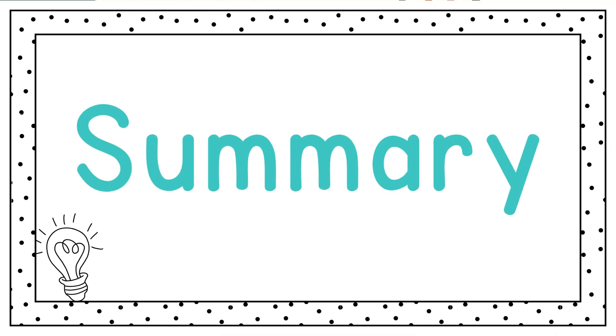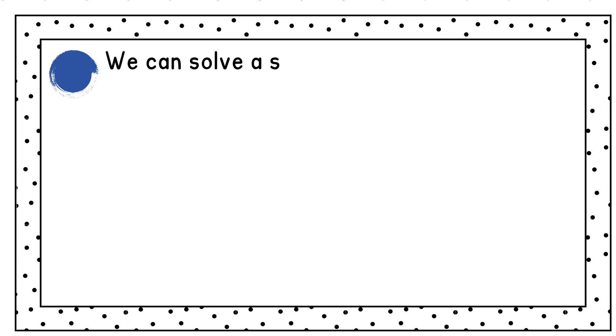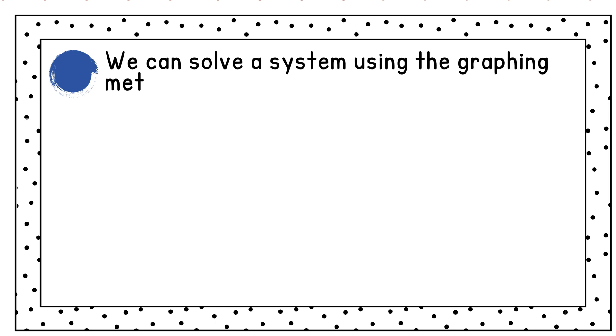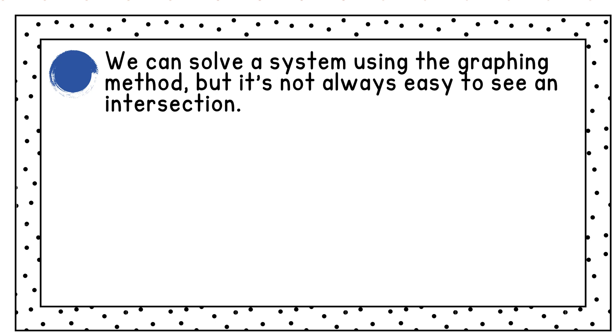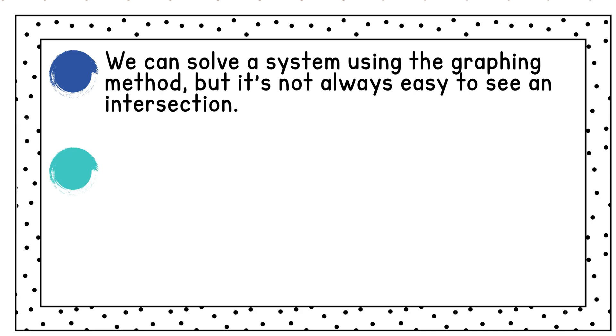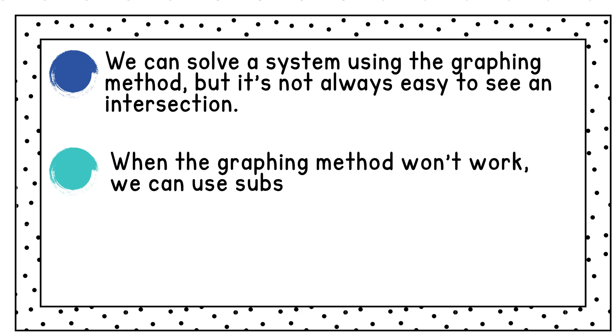Let's recap everything that we've learned. We can solve a system using the graphing method, but it's not always easy to see an intersection. When the graphing method won't work, we can use substitution.